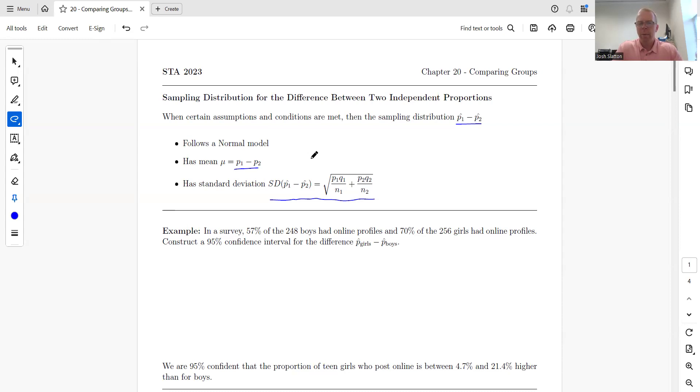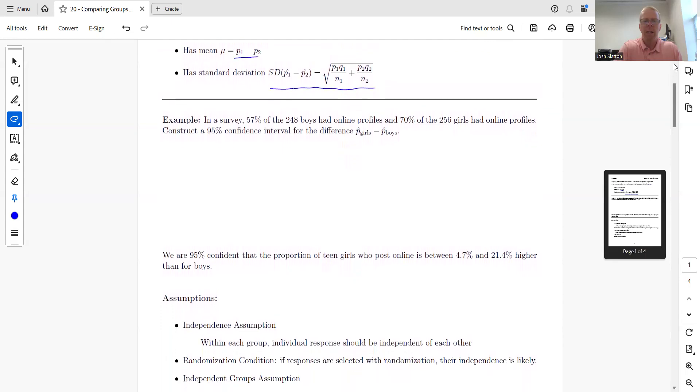It always has to be positive, but if p2 is bigger than p1, then the difference would be negative and we cannot have that. So that's one way to remember that you're always going to be adding. If you like, you could look up examples for why standard deviation gets bigger even if you're subtracting values. But just remember, adding standard deviations—we don't subtract standard deviations.